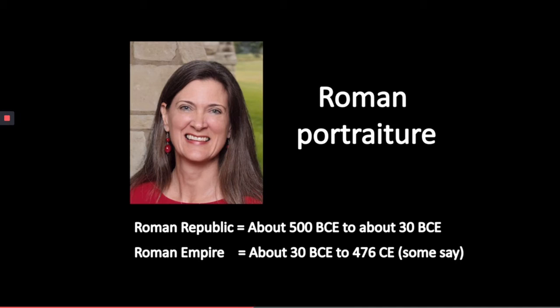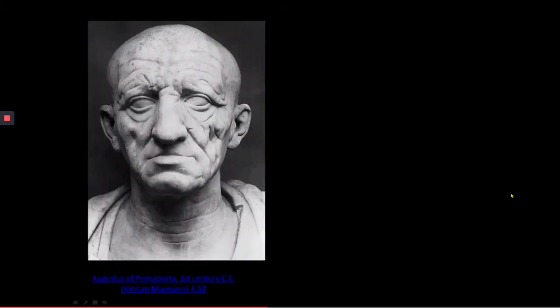Ultimately, what we believe happened is that wealthy patrician families began to replace the wax death masks by commissioning marble portraits of their elderly family members. The work we're looking at right now, called Head of a Roman Patrician, is an example of one of these, made somewhere between 75 and 50 BCE, near the end of the Roman Republic. We believe these portraits were made by Greek sculptors who moved from place to place, as Roman sculptors were mainly skilled at working in terracotta at this point.